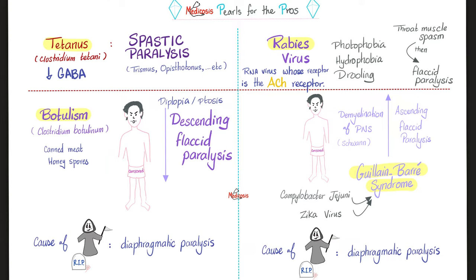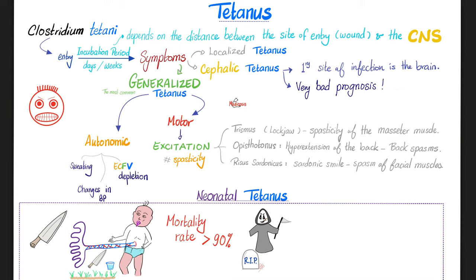All of this was discussed in the last video. Tetanospasmin decreases GABA release. Now let's talk about the disease tetanus. The infecting organism, Clostridium tetani, enters your body and after an incubation period lasting days or weeks, symptoms begin. The length of the incubation period depends on the distance between the site of entry and the central nervous system — the closer the site of entry, the shorter the incubation period; the longer the distance, the longer the incubation period.